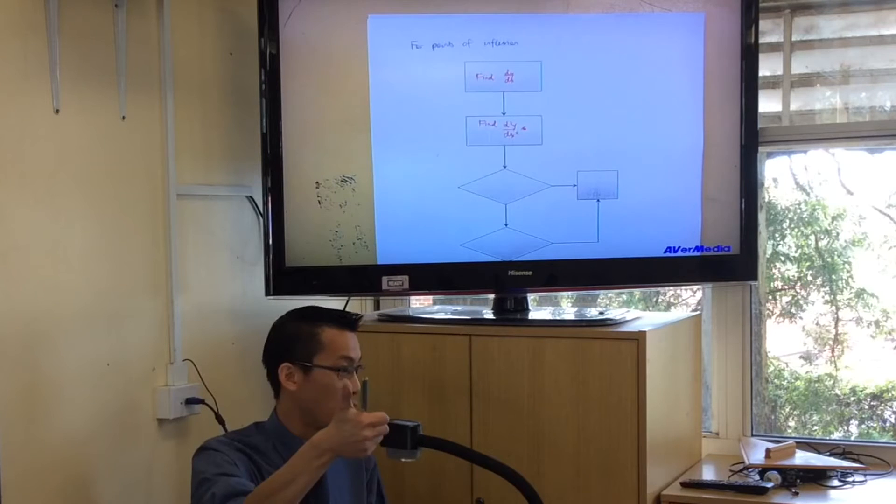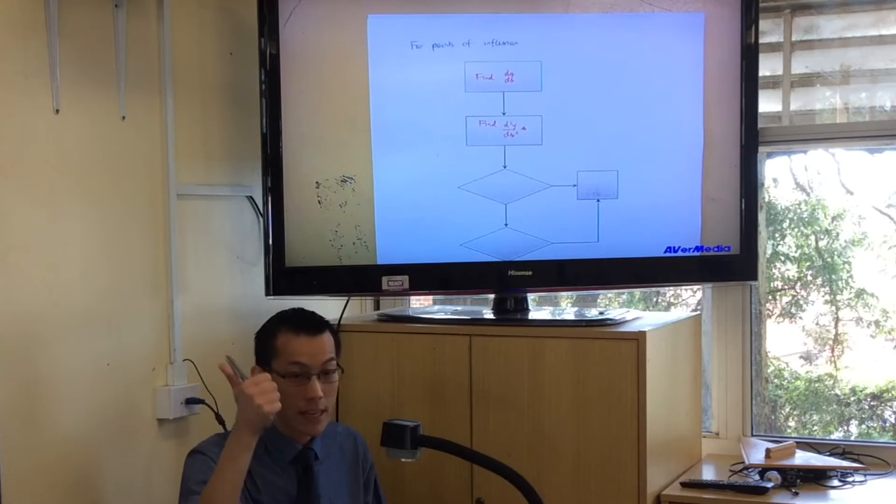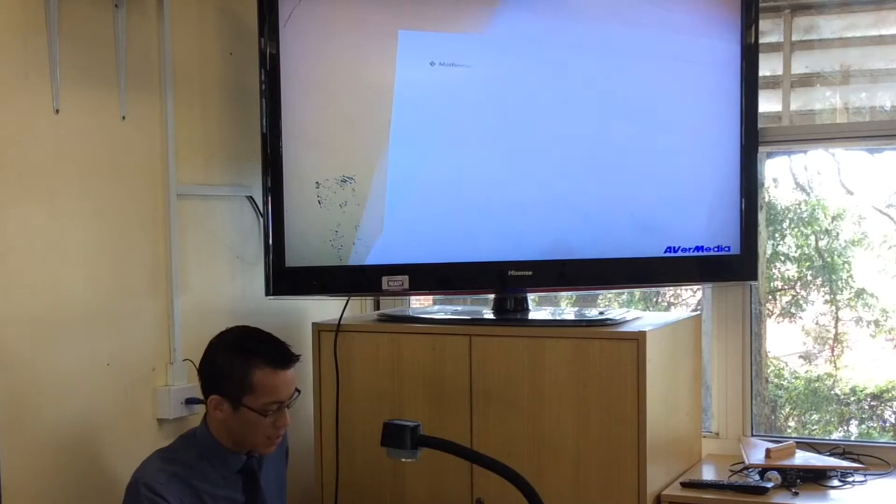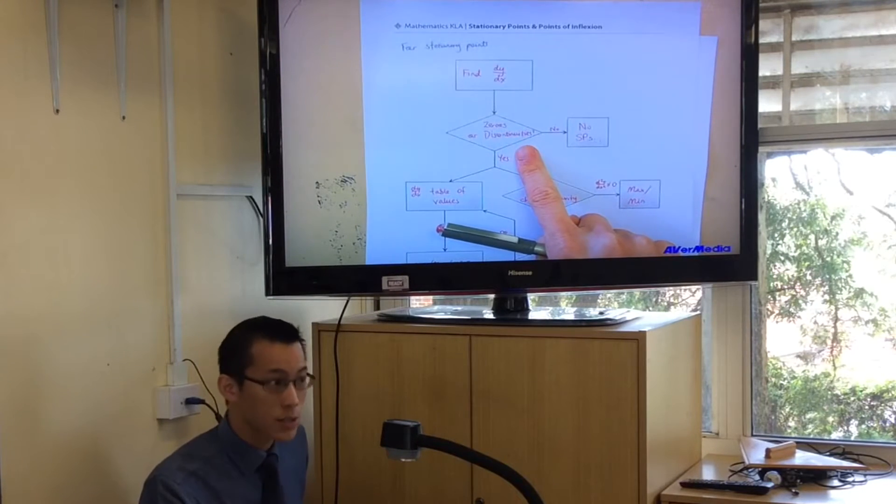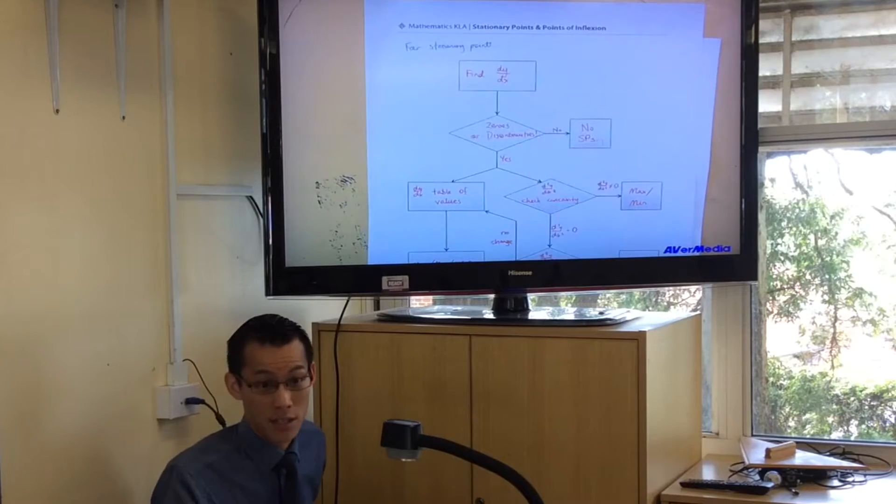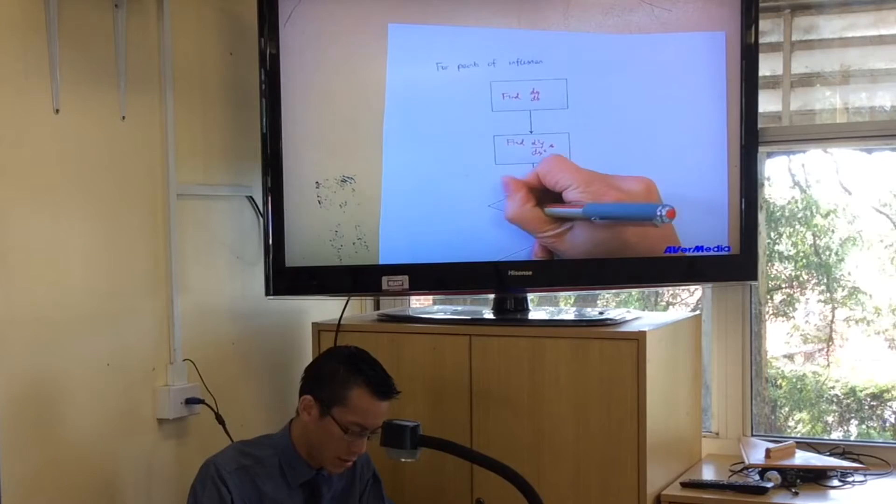But secondly, I want to know where there are discontinuities. Do you see the commonality? The critical points. So I'm looking for zeros or places where the second derivative just doesn't exist at all. So zeros or discontinuities. Not discontinuities in the graph, discontinuities in the second derivative.